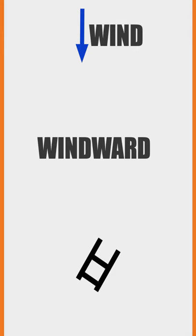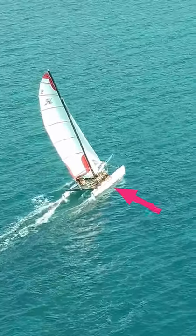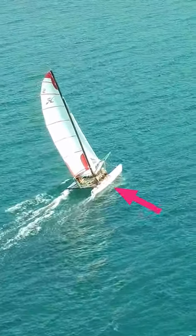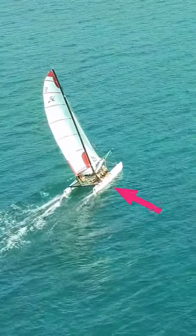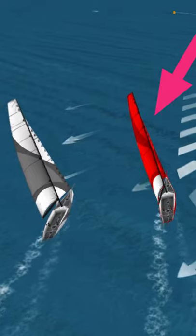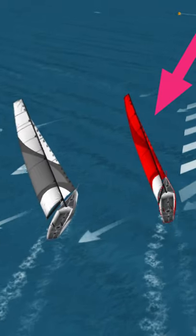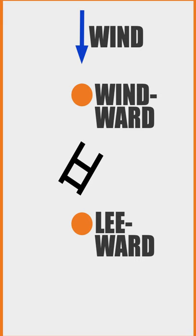Windward is anything between the subject and where the wind is coming from, such as the windward side of the boat or object, another boat to windward, or the windward mark. When you are facing the wind, you are looking to windward.